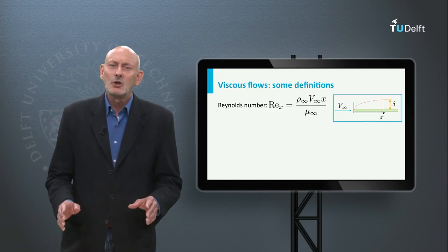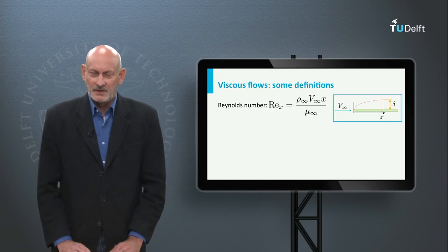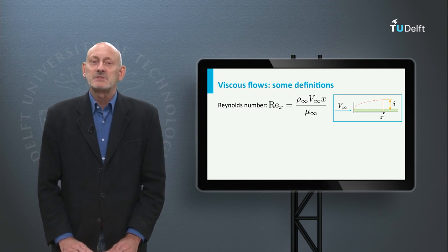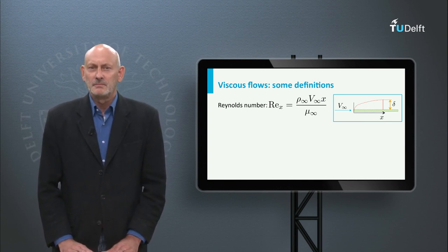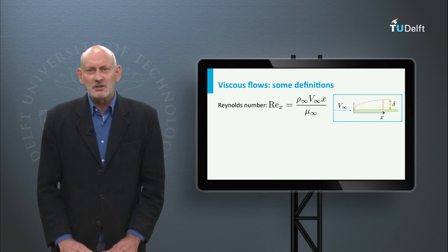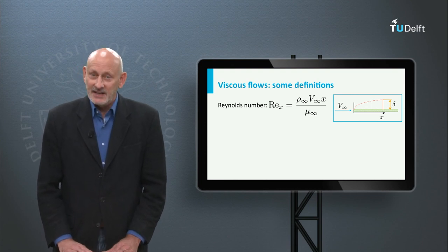Let us define the local Reynolds number. It is defined as rho times v times x divided by mu, with x running along the flat plate starting at the leading edge.